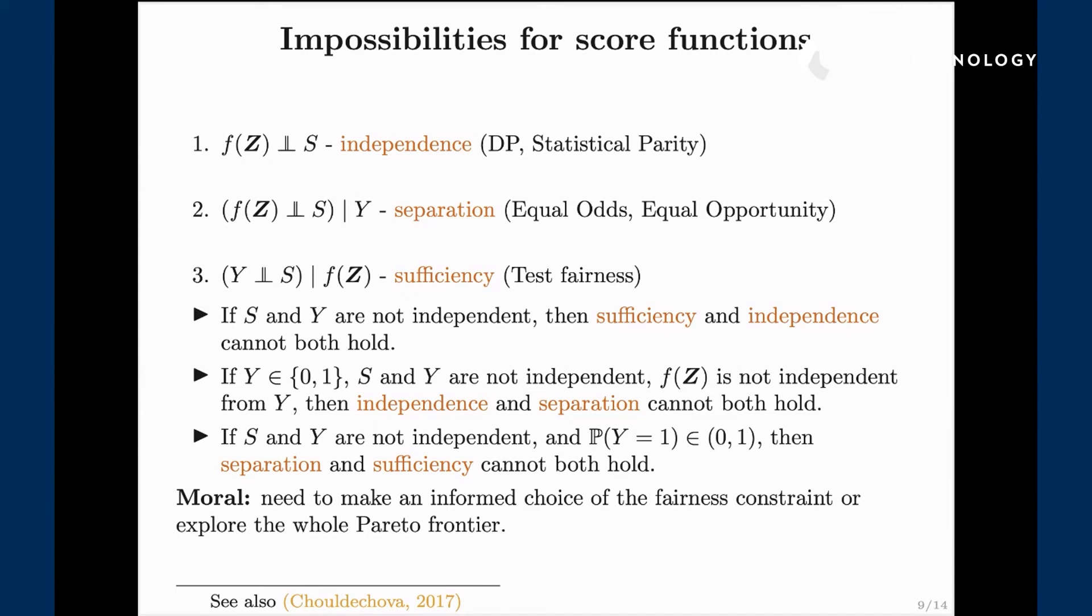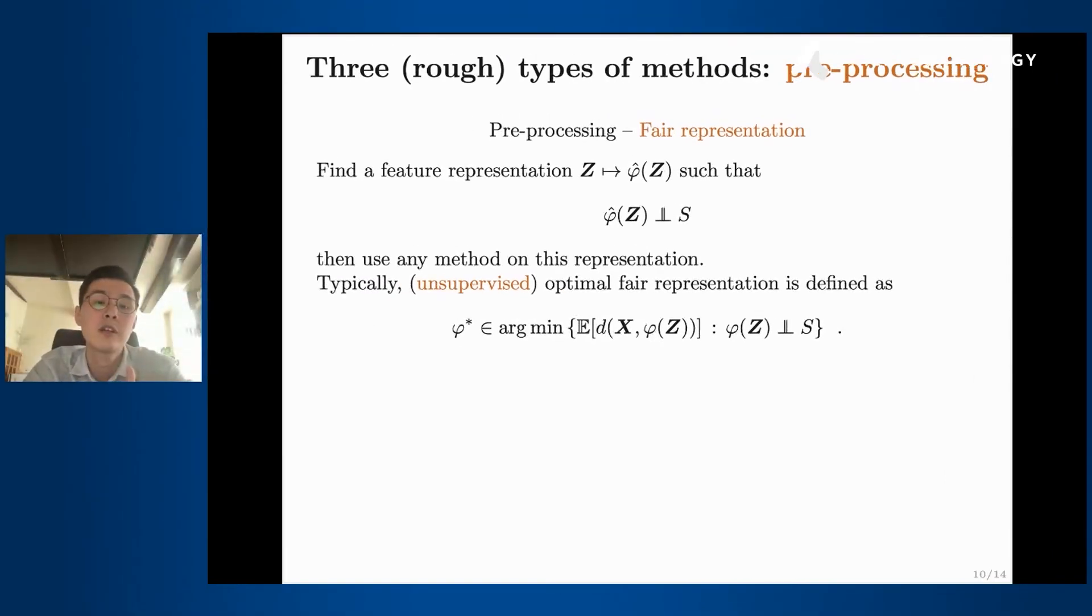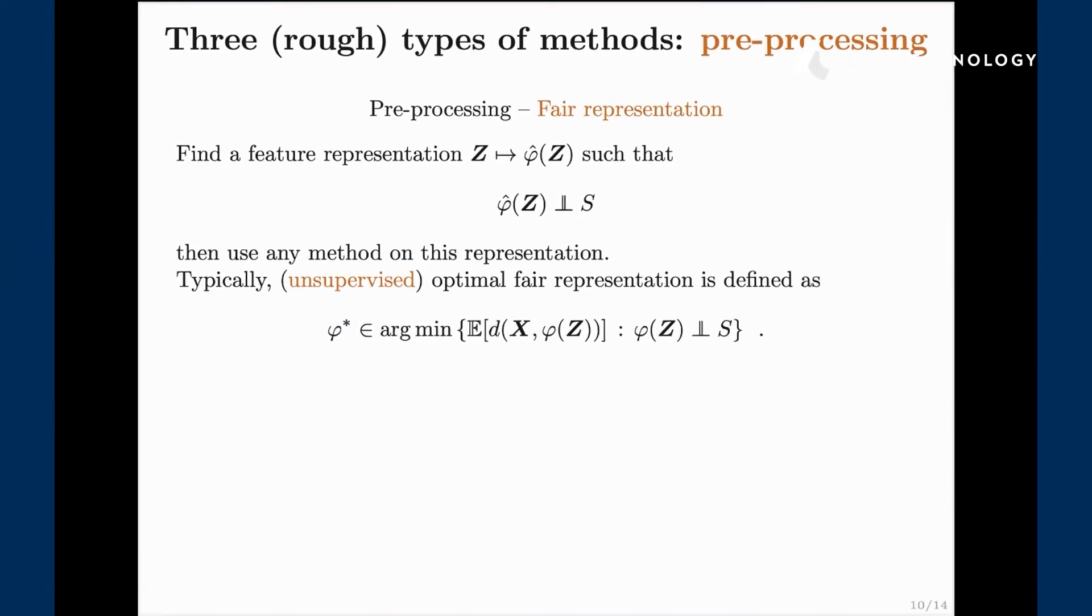There are three different types and the first one is called pre-processing. The synonym of it would be fair representation. Essentially we have our feature vectors, let us find a transformation of these feature vectors maybe in another space or in the same space so that the representation becomes independent of the sensitive attribute. For instance we can try to decorrelate the sensitive attribute from the representation. The nice thing about this problem is that it's unsupervised. In a sense you can create a fair representation and then use any machine learning algorithm on top and you can solve any type of problem. You can create fair representation and then work with classification, work with regression, work with anything else.